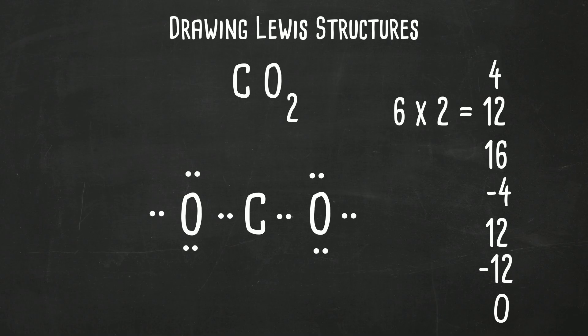Notice that the octet rule is not satisfied for carbon. The oxygens are satisfied with 8 but the carbon only has four electrons. So what you can do is create a double bond. You can move two of the electrons from the oxygen on the left which creates a double bond, and do the same on the right.